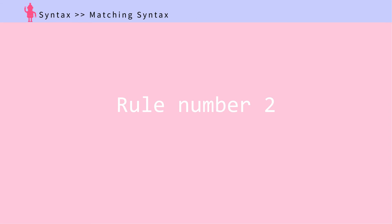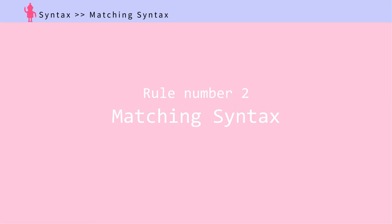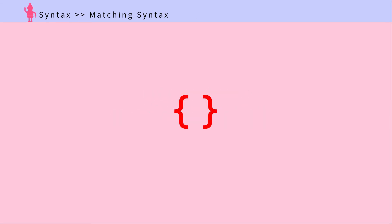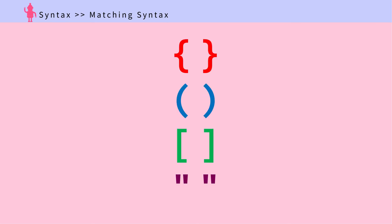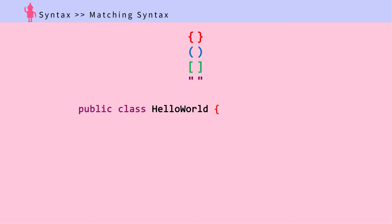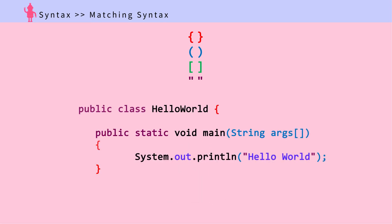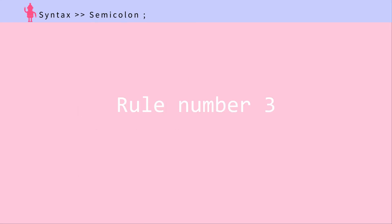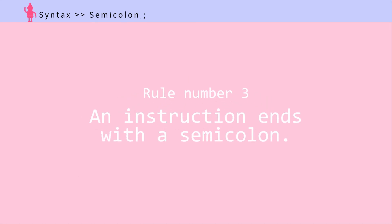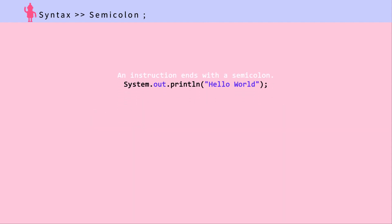Rule number two: there are special punctuation marks such as curly braces, parentheses, brackets, and quotation marks that surround code expressions. These characters need to be in pairs. Rule number three: end an instruction with a semicolon.